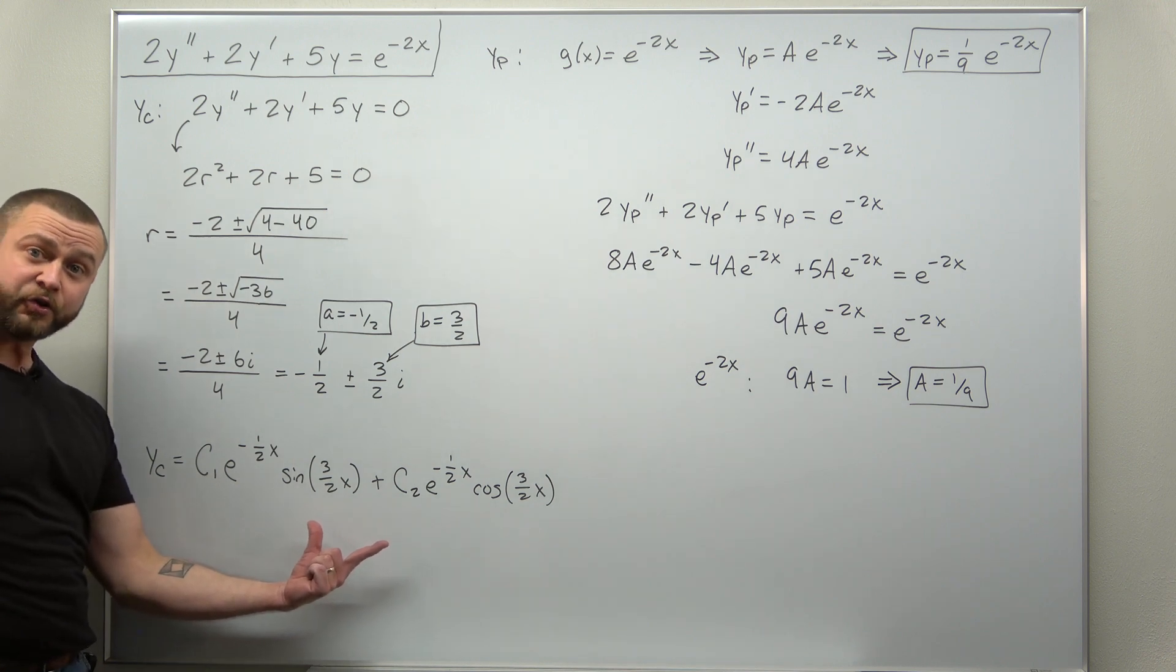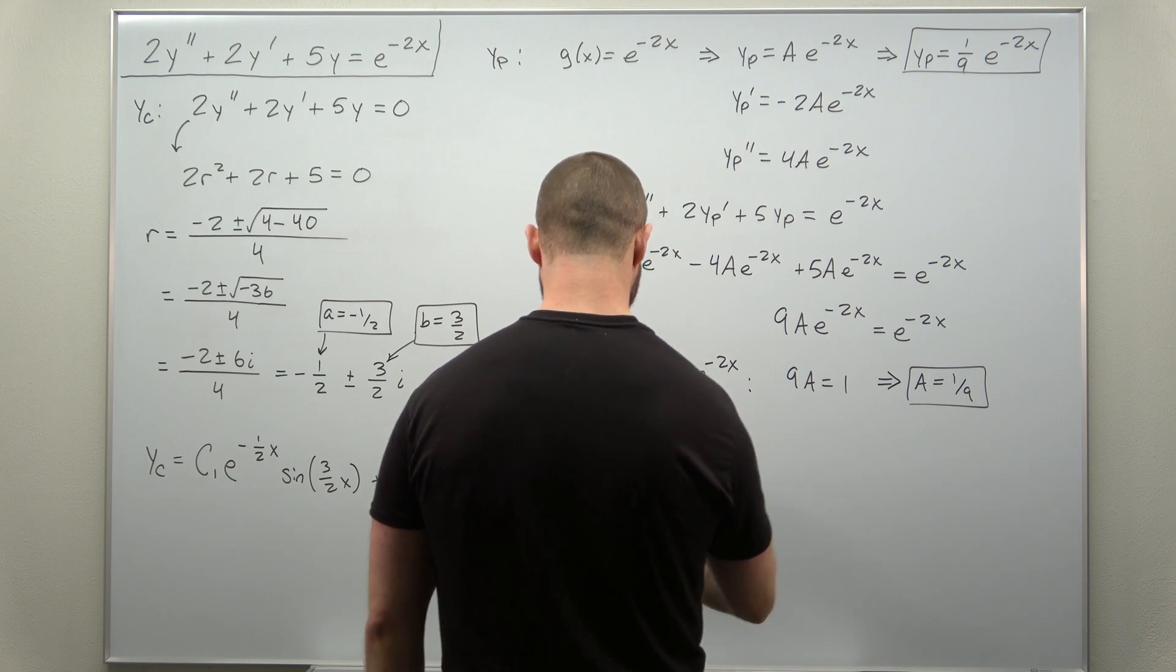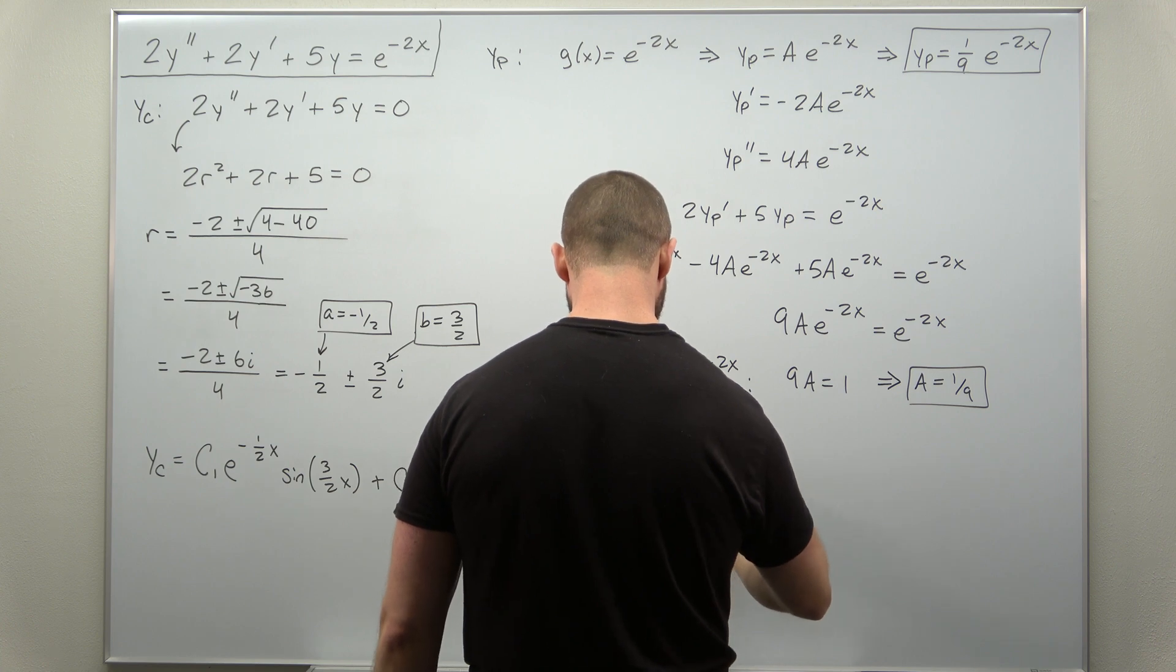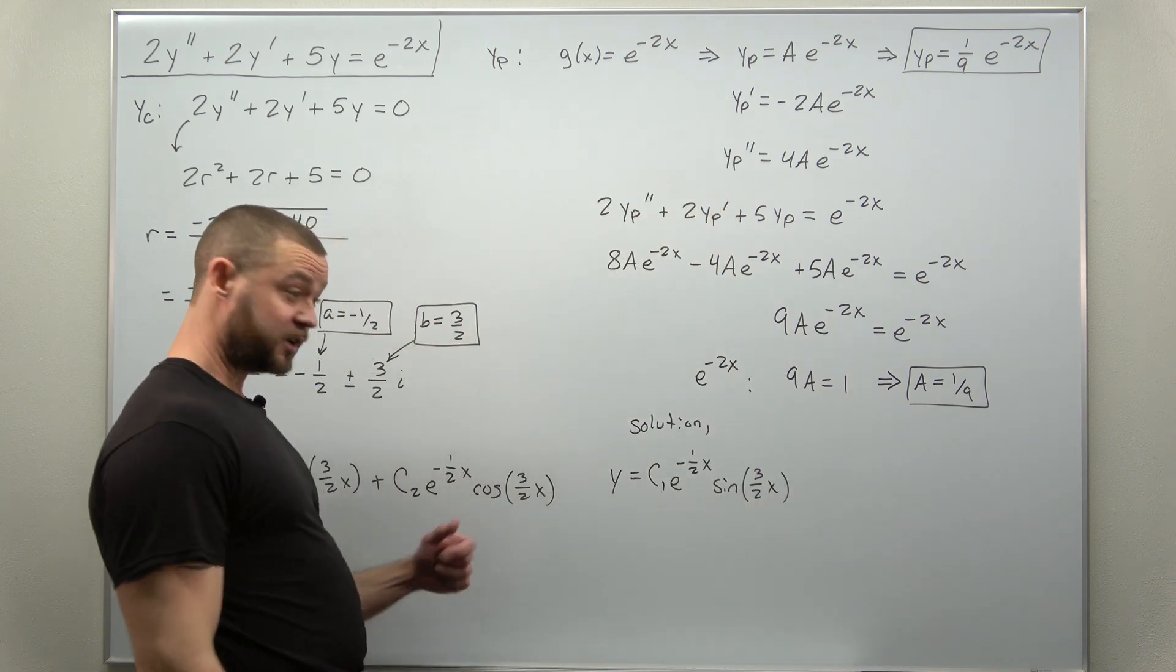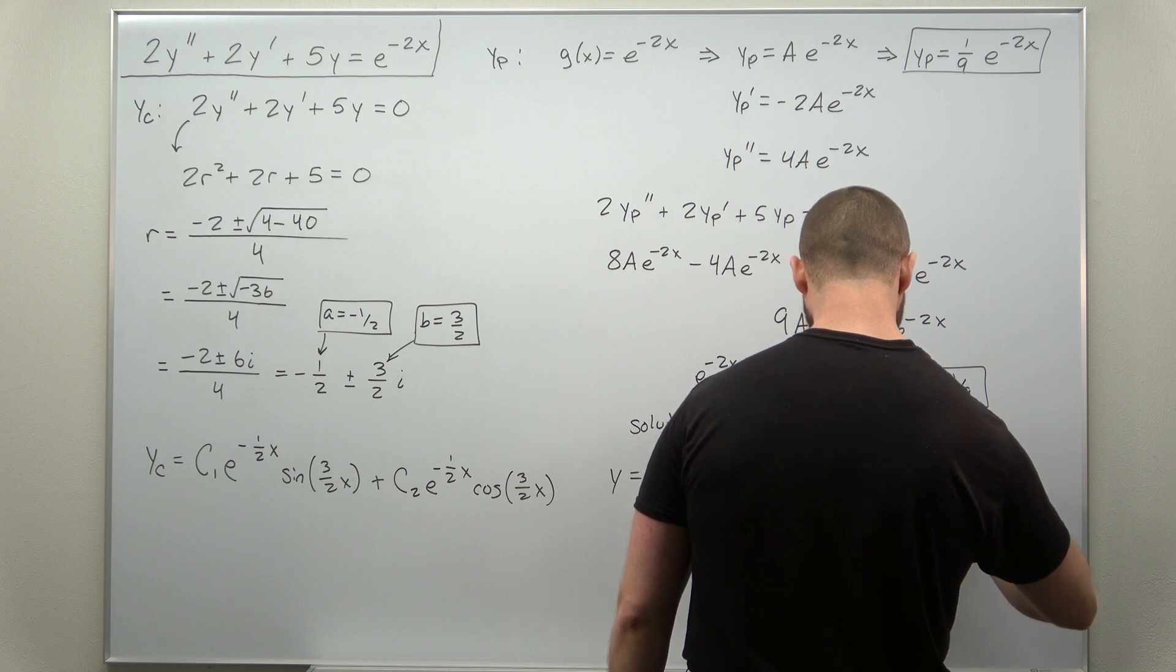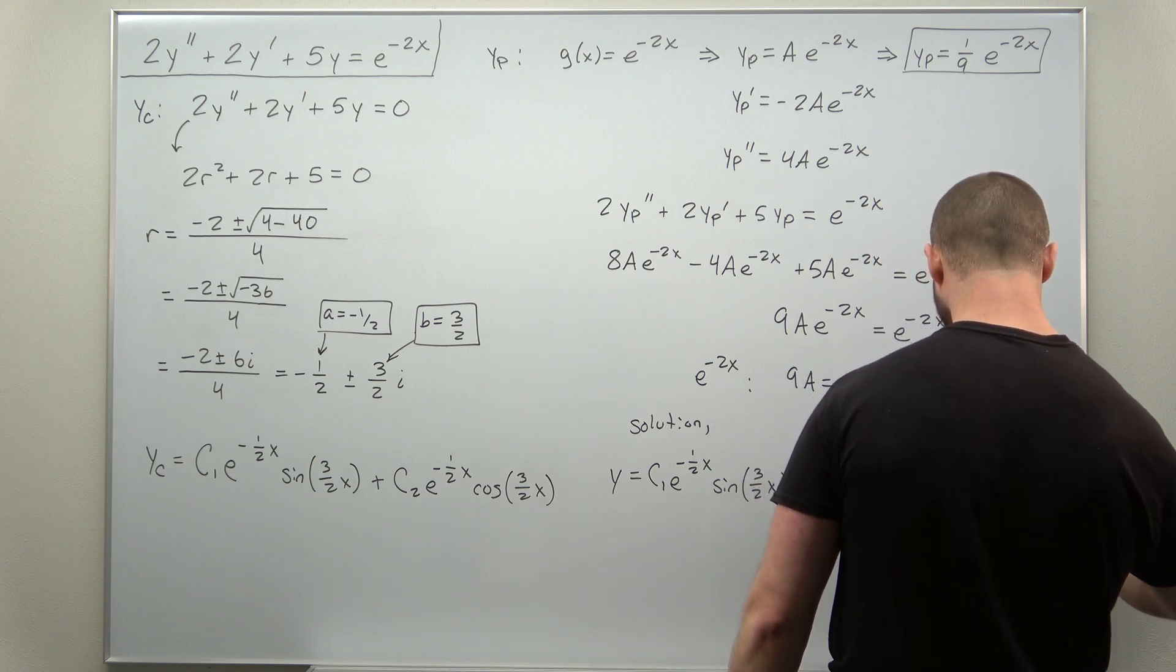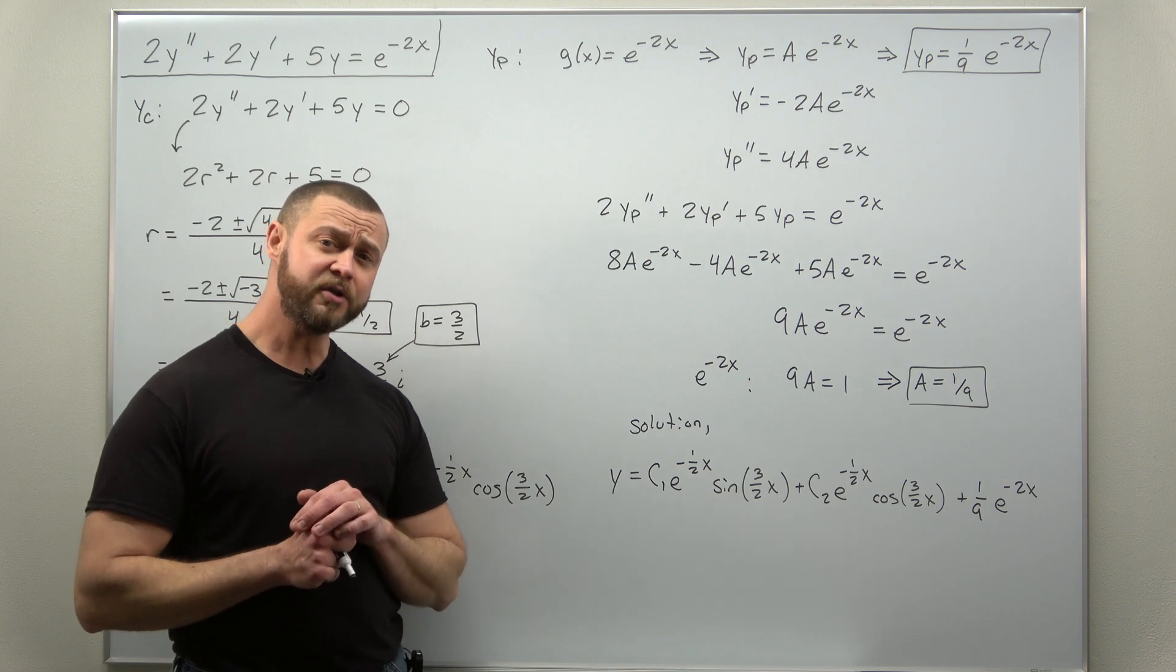We have our complementary solution. Let's just write down our full solution, which is a linear combination of the complementary solution and the particular solution. So we're just going to write this down again. So c1 e to the negative 1 half x times cosine of 3 halves x plus c2 e to the negative 1 half x times sine of 3 halves x. And then we add to that our particular solution, which is 1 ninth times e to the negative 2x. And that is our full solution to the non-homogeneous ODE.